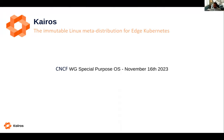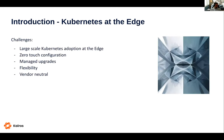For the sake of the recording, I'm Dimitris Karakasilis. I work for Spectro Cloud on their open source team, which mainly maintains and develops Kairos — it's one of the main projects. I'm here to talk about Kairos today. Kairos is a special purpose OS, as we call it here: an immutable meta-distribution mainly for edge Kubernetes. These terms will make sense later in the presentation.